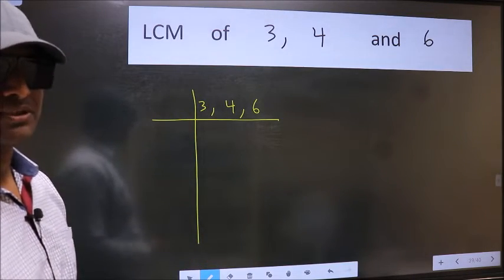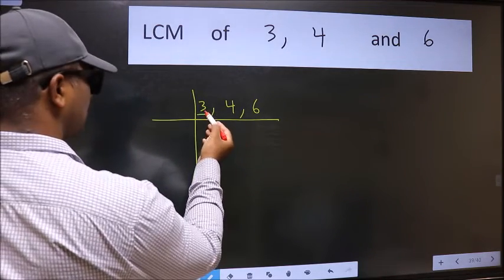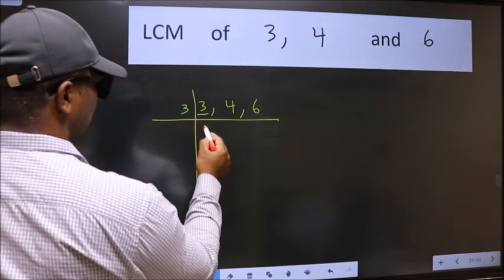Now we should focus on the first number which is 3 here. 3 is a prime number so 3 once is 3.